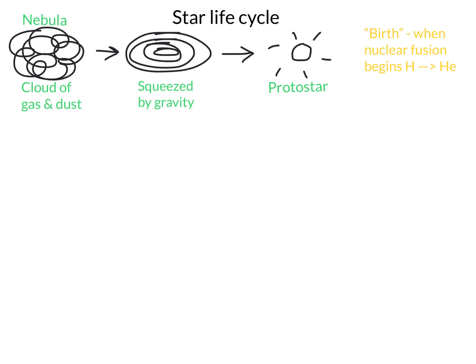Let's start out with a star that is small to medium sized, like the sun. We're going to take this pattern down the right hand side of our page. Our sun is going to live for about 10 billion years before it starts to run out of fuel. We will continue fusing hydrogen to helium for this 10 billion year time period, but eventually the hydrogen runs out. The sun has no choice but to start fusing helium atoms together, and using heavier atoms means the temperature increases. It's going to expand and become a red giant.